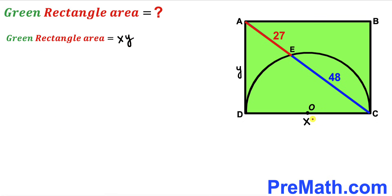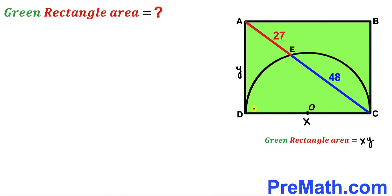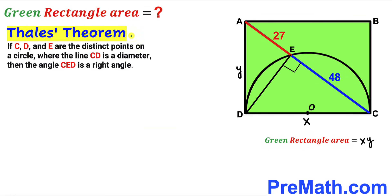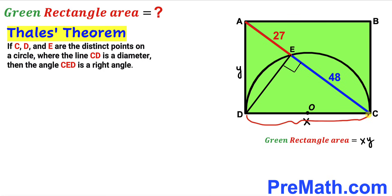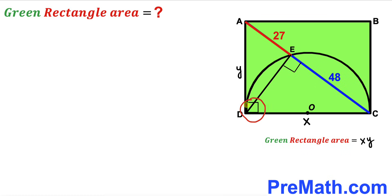Our task is now to find the values of X and Y. I'm going to connect points D and E. Recalling Thales' theorem: if C, D, and E are distinct points on a circle where CD is the diameter, then angle CED is a right angle. So angle CED is 90° since C, D, and E lie on the same semicircle and CD is the diameter. Furthermore, angle ADC is also 90° since ABCD is a rectangle.